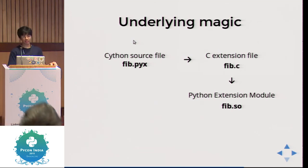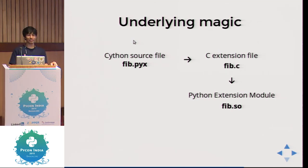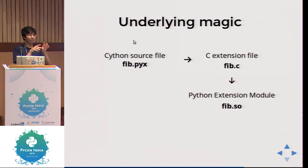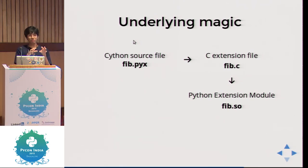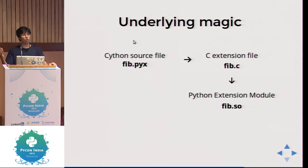The underlying magic is: when you compile Cython code, it checks your code and makes an equivalent C code, which is then made into a Python extension module. Once you Cythonize your code, you can import that module and use its functions. In a demo, the pure Python version takes 0.23 seconds and the Cython version takes 0.06 seconds — so it is significantly faster.